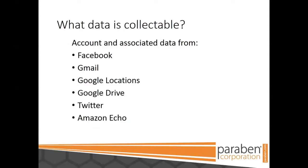Let's first talk about what data is collectible. Typically, we focus on different apps associated with smartphones to be able to gather that cloud information or those cloud keys. Currently, we support Facebook, Gmail, Google Locations, Google Drive, Twitter, and the Amazon Echo. These are available for both Android and iOS, and they should be available through the current firmware release as we are constantly adding updates.